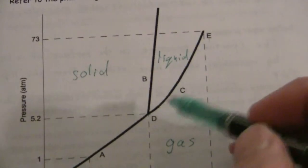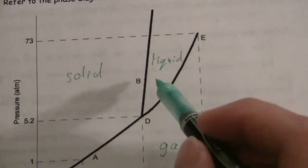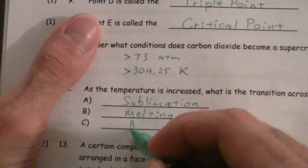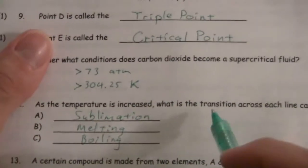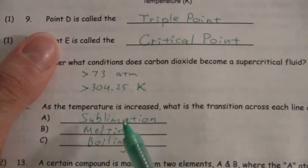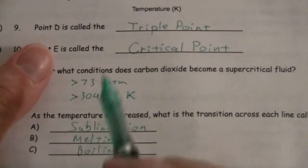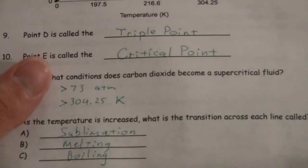And, likewise, line C, crossing it, moving in the direction of increasing temperature, liquid to gas, that is the boiling transition. So, the transition going from solid to gas is called sublimation, transition going from solid to liquid is called melting, and from liquid to gas is called boiling.